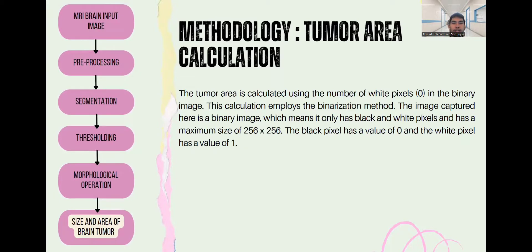The last process is tumor area calculation. The tumor area is calculated using the number of white pixels in the binary image. This calculation employs the binarization method. The image captured is a binary image, meaning it only has black and white pixels and has a maximum size of 256 by 256. The black pixel has a value of 0 and the white pixel has a value of 1.